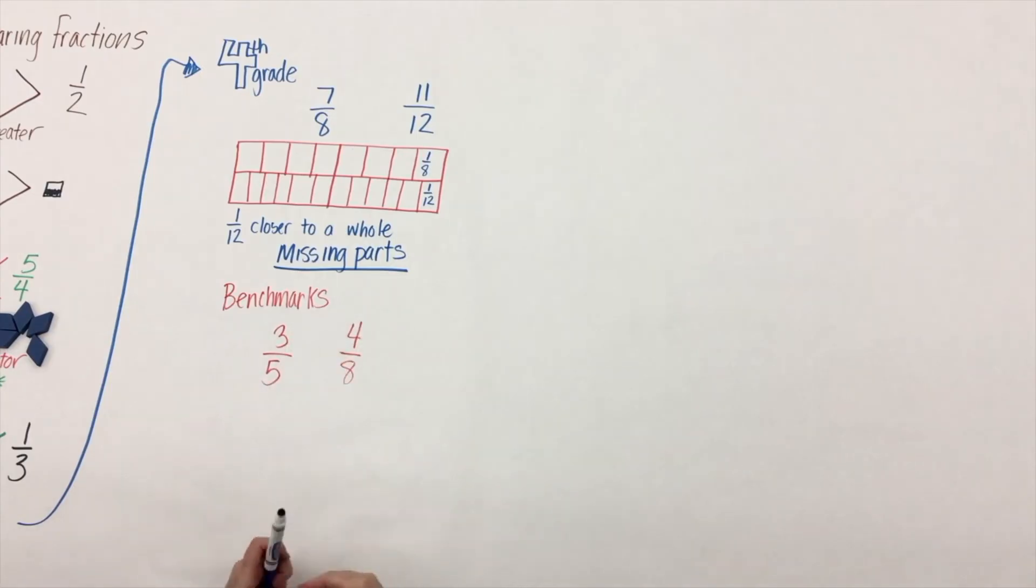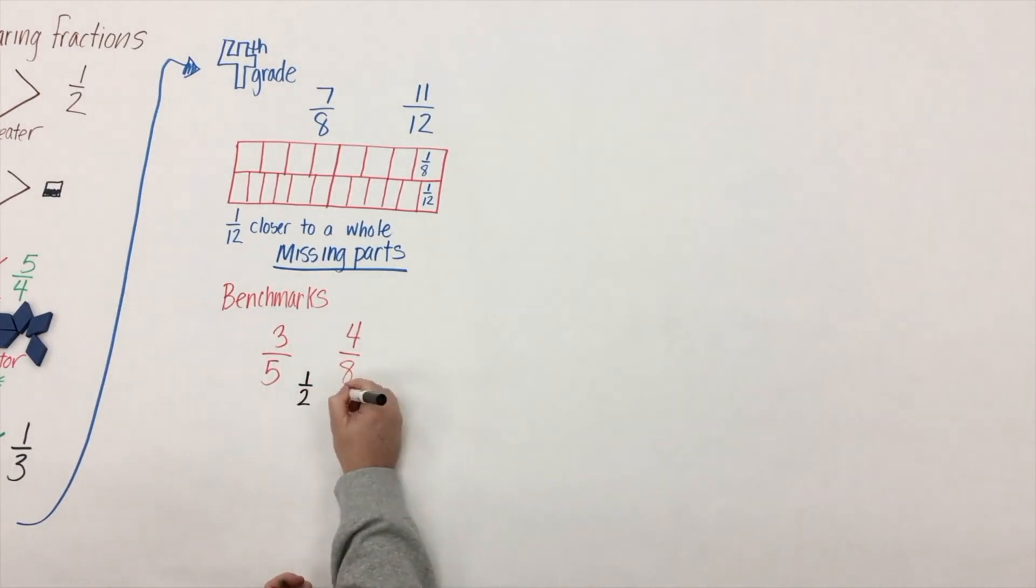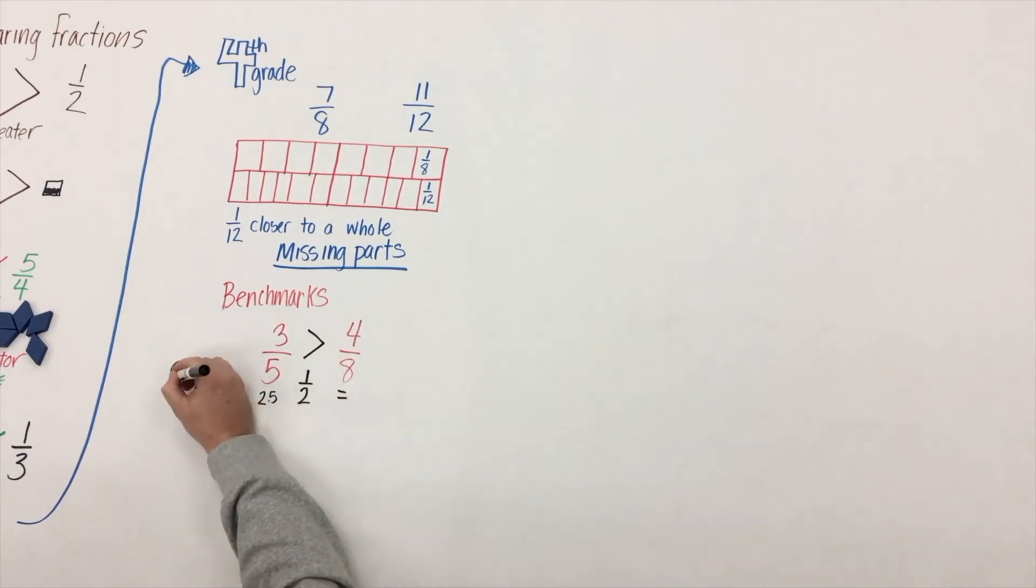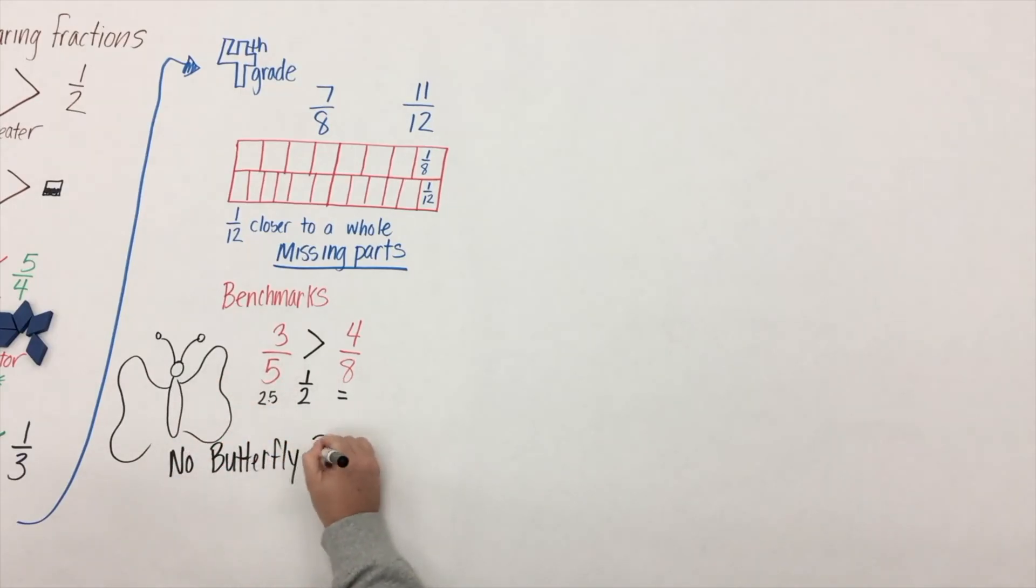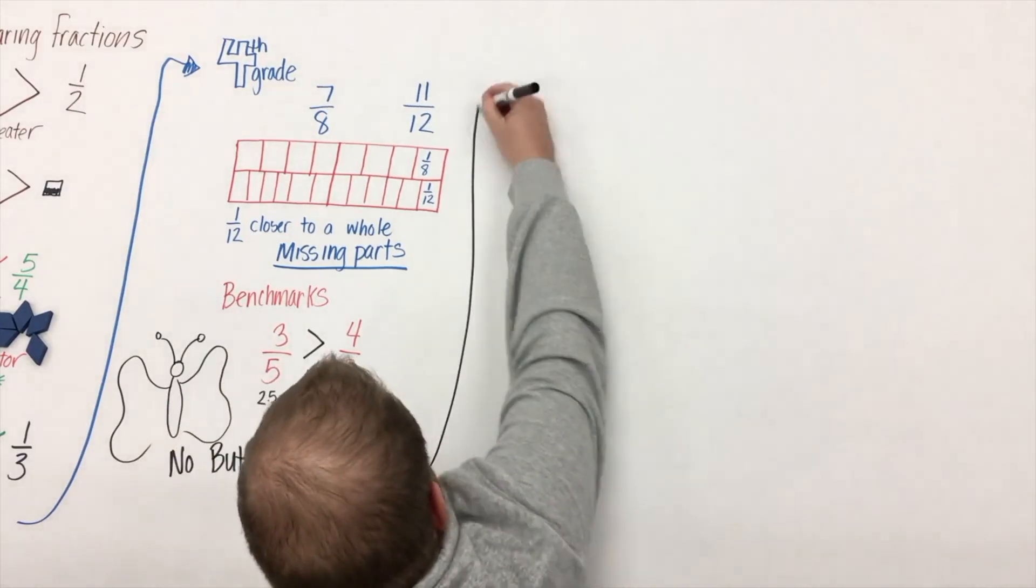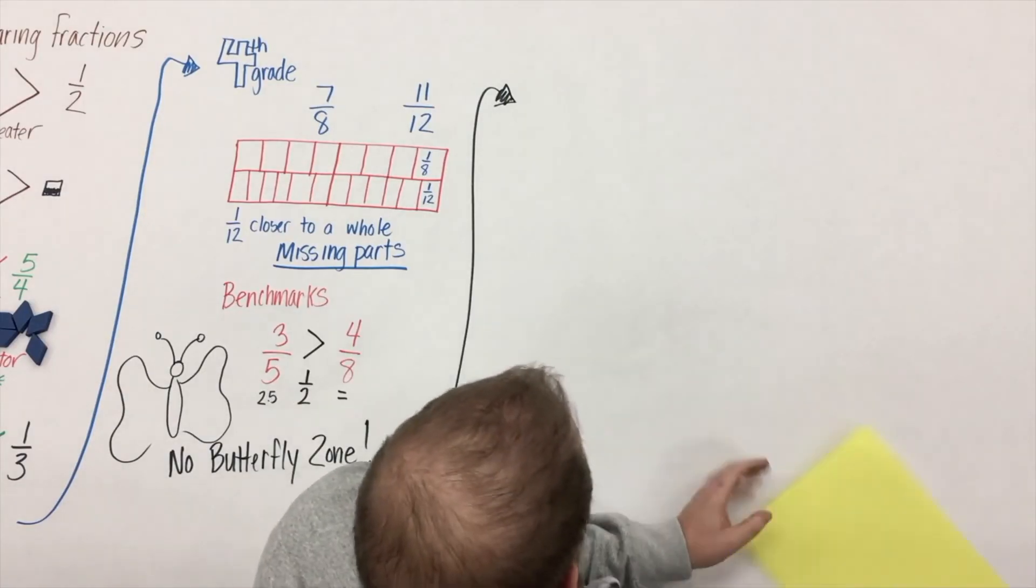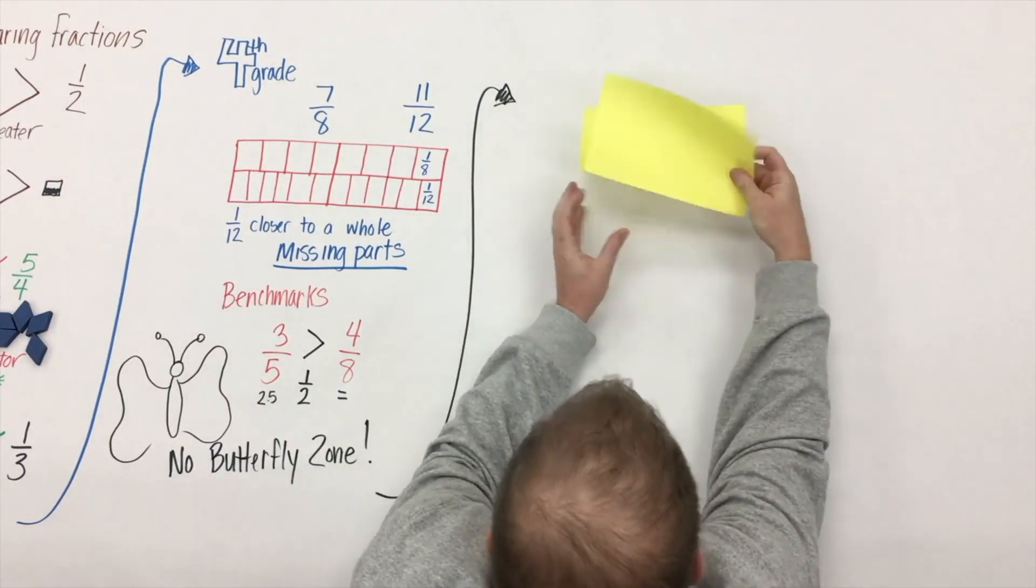And the last strategy we can use to compare fractions is with a benchmark. Here we'll use a benchmark of a half. Well, we know that four-eighths is equal to a half, and half of five is two and a half. Yep, we're not using any butterflies here, and butterflies have no place with comparing fractions.